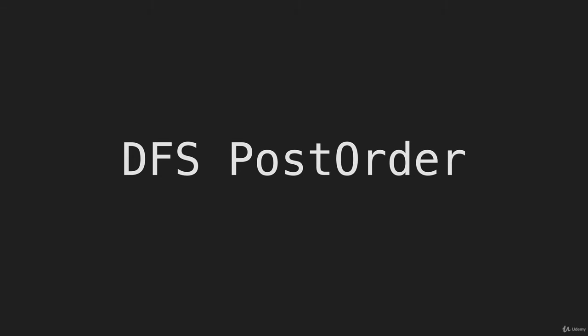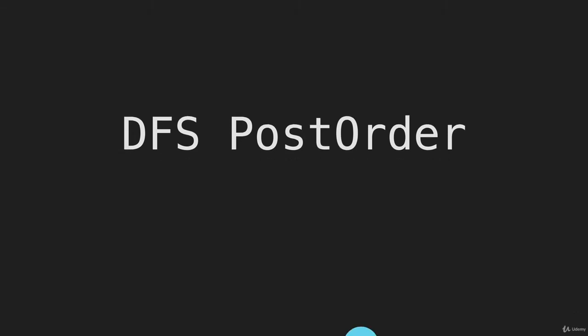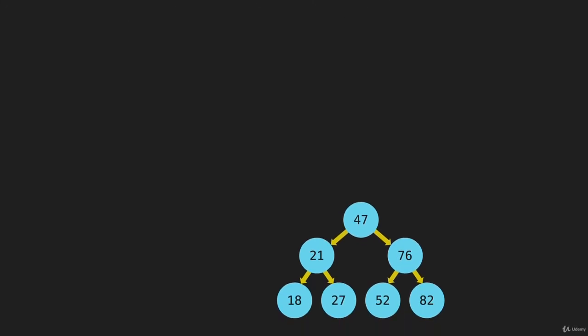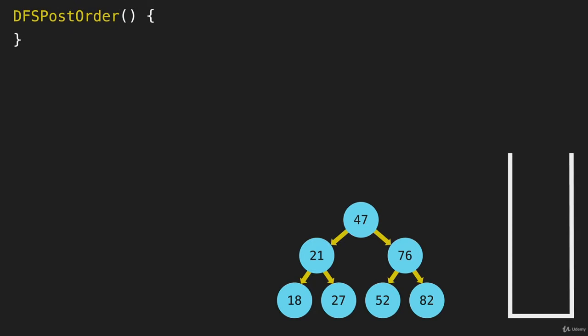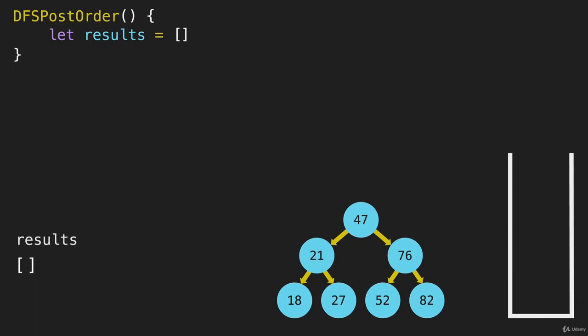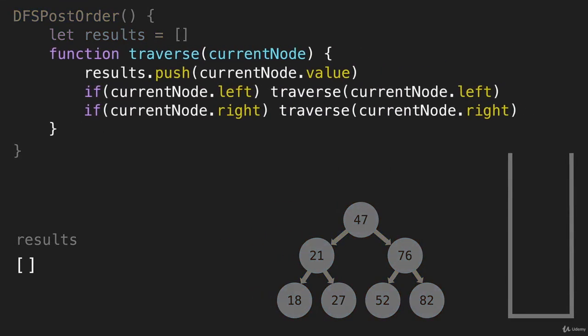Now we're going to write the code for depth-first search post-order. We'll bring up our tree and our call stack and start writing our method DFS post-order. The first thing we're going to do is have our results array, just like we had in pre-order. I'm going to bring in the function that we had in pre-order — this is the one for pre-order.